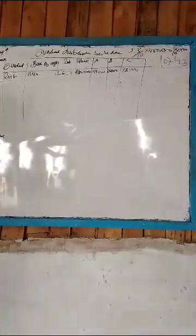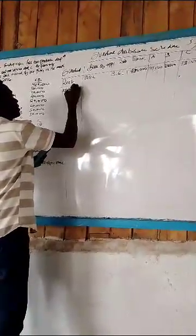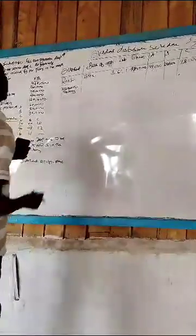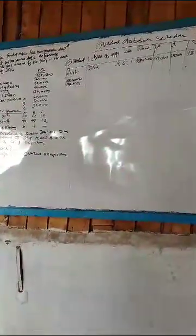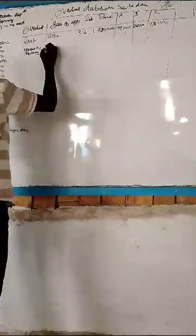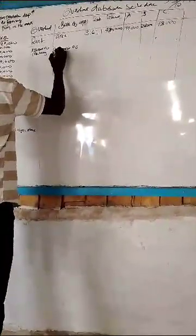The same process applies to the next overhead: insurance of machinery. The base of apportionment for insurance of machinery is the book value of the machinery.